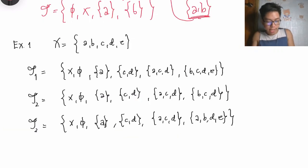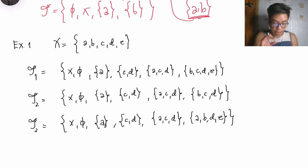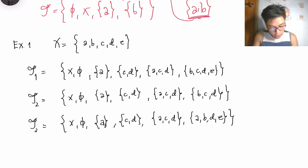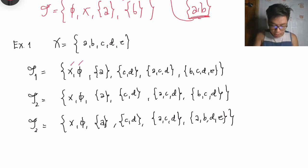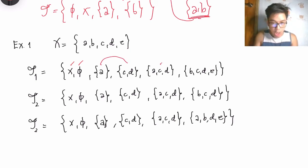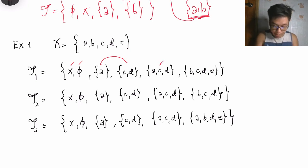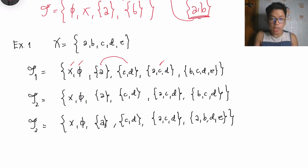Let's consider another example where X = {a, b, c, d, e}. We'll check if the given tau collections are topologies. For tau sub 1: the presence of X and the empty set satisfies condition one. The union of the given sets yields results that are all present in tau sub 1, and intersections are also all present. So tau sub 1 is a topology.